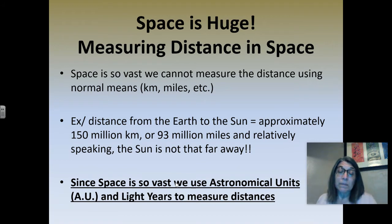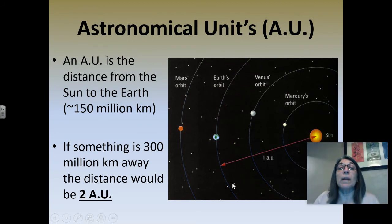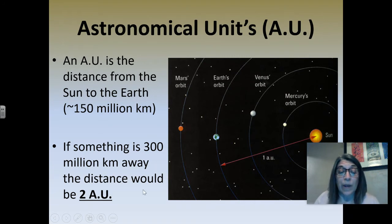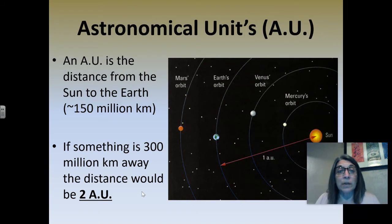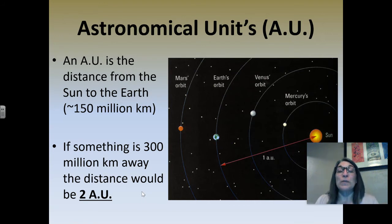I'm going to keep moving along — you can always pause at any time if you need to finish taking notes. So what's an AU? What's an astronomical unit? The astronomical unit is basically the distance from the sun to the Earth: 150 million kilometers or 93 million miles. So if something is 300 million kilometers away, it would be two astronomical units — 150 million plus another 150 million equals 300 million. Two astronomical units in miles would be 186 million miles. One astronomical unit equals 93 million miles.